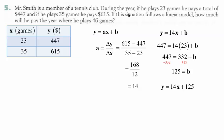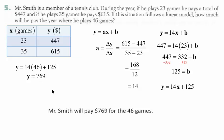Then we want to use that equation to figure out how much he's going to pay if he plays 46 games. So y equals 14 times 46 plus 125. The 14 times the 46 gives us a number plus 125 is 769. So he's going to pay $769.